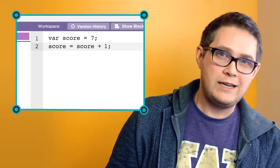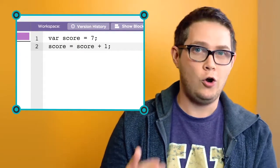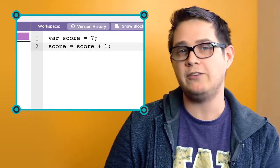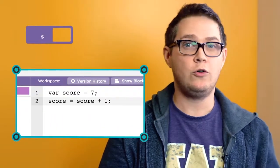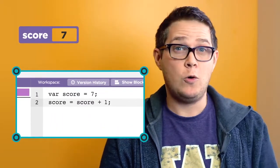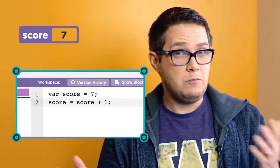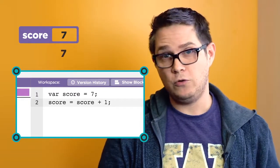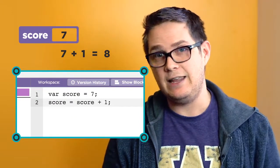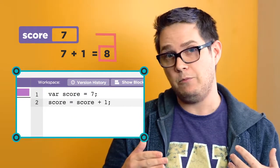This line of code can be read as score gets the current value of score plus one. So if the current score is seven and the user acquires a coin, the computer must retrieve the current value of the score, which is seven, add one to it, making eight, and then store the new value back into memory.